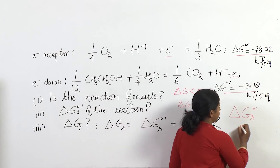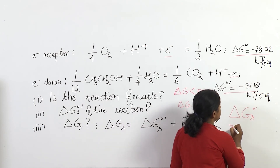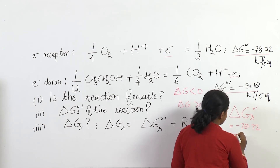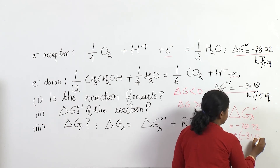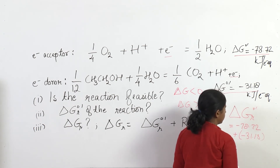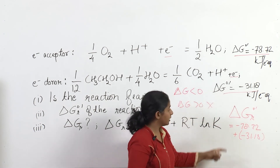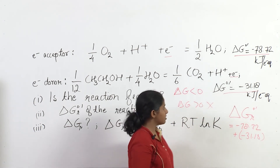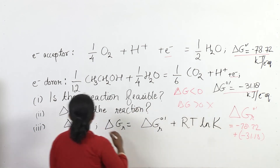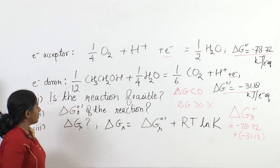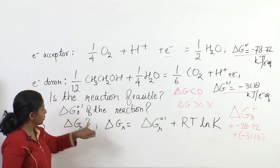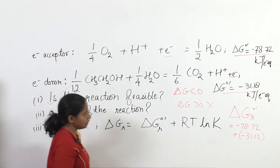We have delta G_r equal to minus 78.72 plus minus 31.18. You can be rest assured that this delta G value is less than zero, and thus this reaction is definitely feasible. Adding these two values gives you the delta G_r of the overall equation.